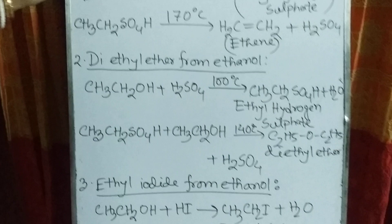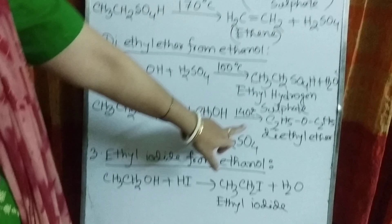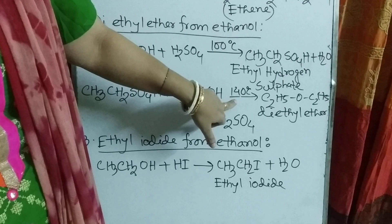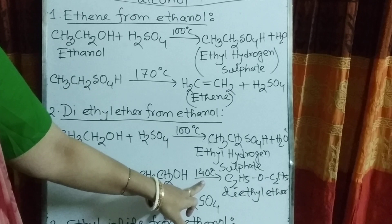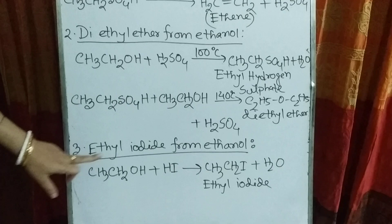There is an MCQ question also. Just look at the previous reaction. At 100 degrees Celsius, ethyl hydrogen sulfate is formed. At 170 degrees Celsius, it converts to ethene. In the second reaction, at 140 degrees Celsius in the presence of excess ethanol, it converts to diethyl ether. You must remember these two temperatures: at 140°C it converts to diethyl ether, and at 170°C it converts to ethene.